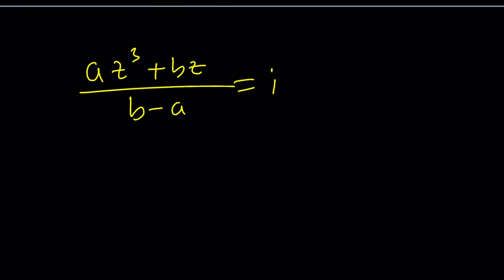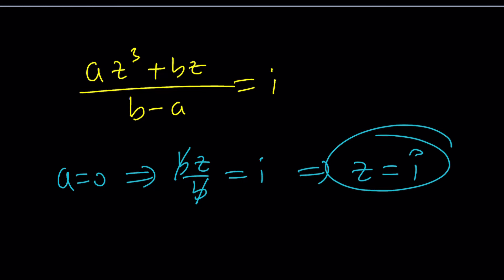What happens, for example, if A is zero? Replace A with zero in the original equation. These are going to disappear. We're going to get BZ over B equals I. B is going to cancel out if B does not equal zero, of course. And from here, we're going to get Z equals I, which we already got. That's interesting.